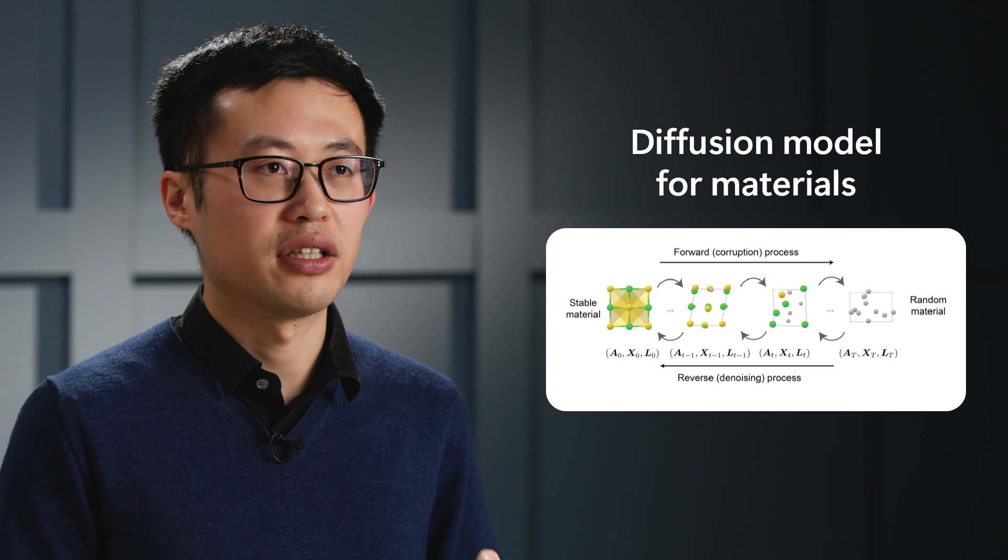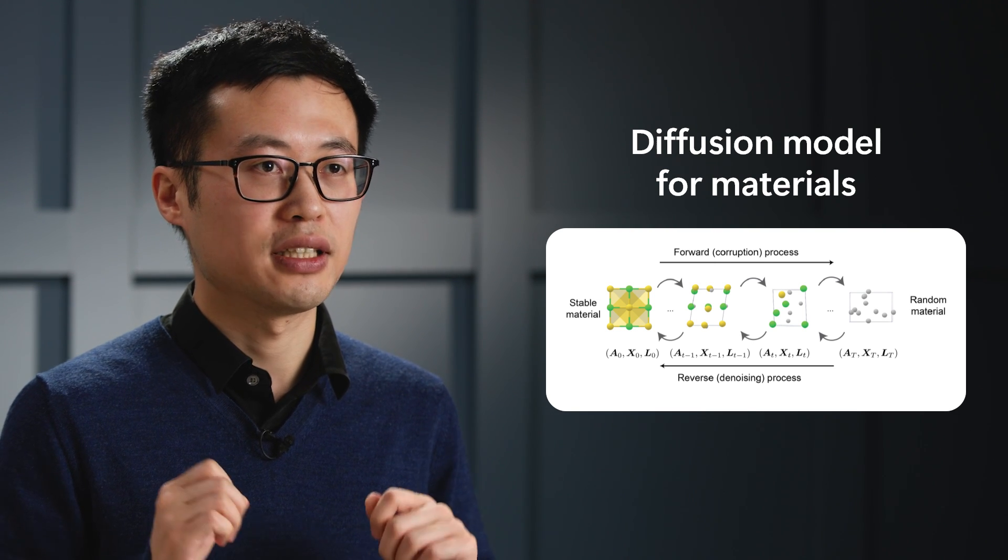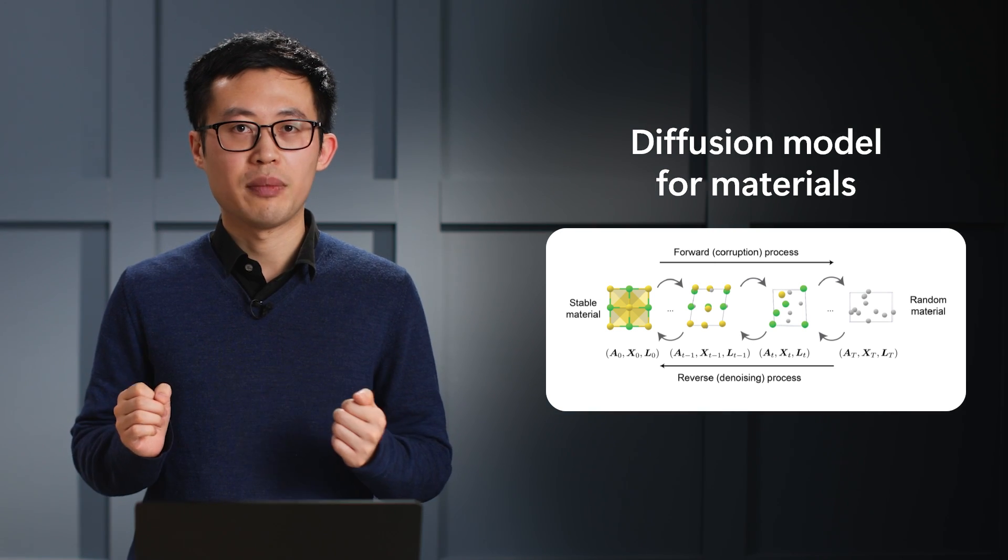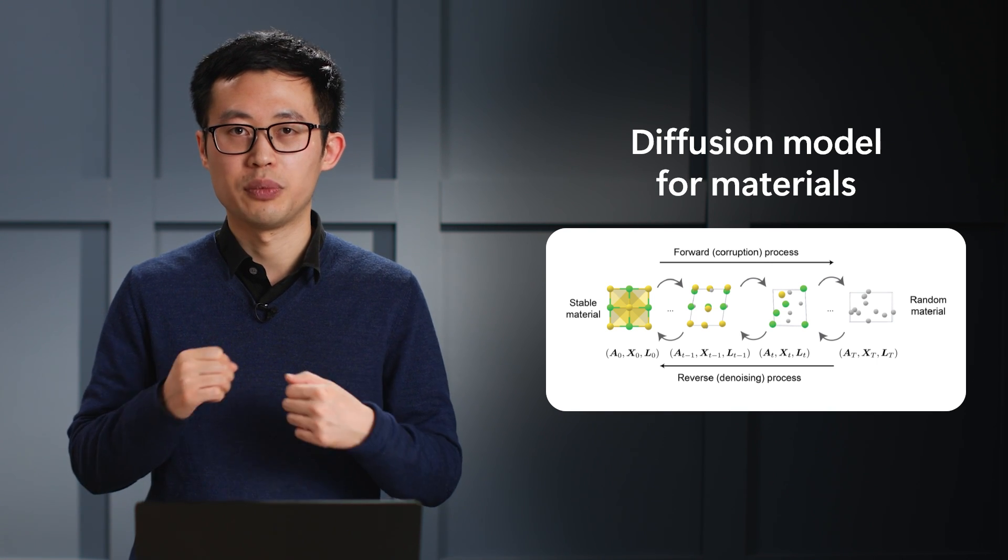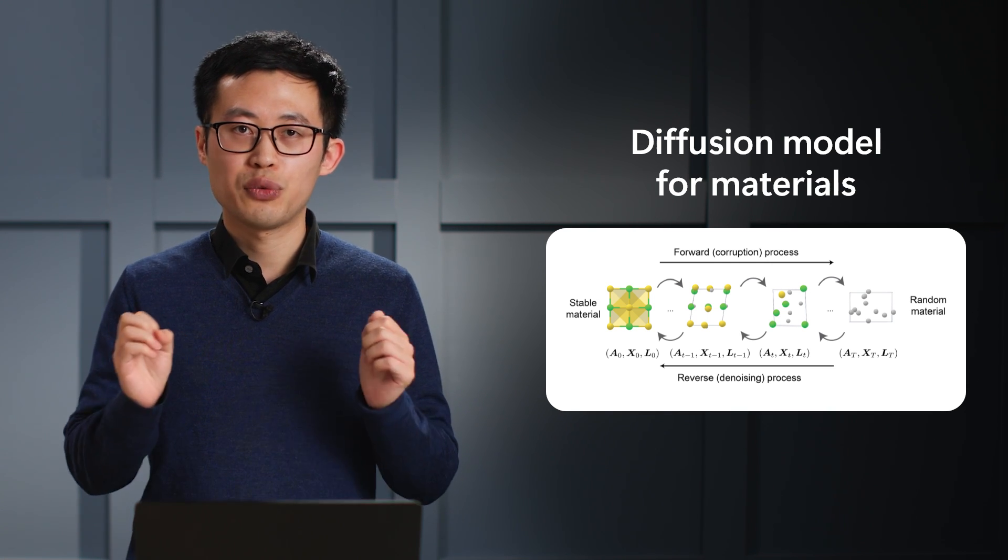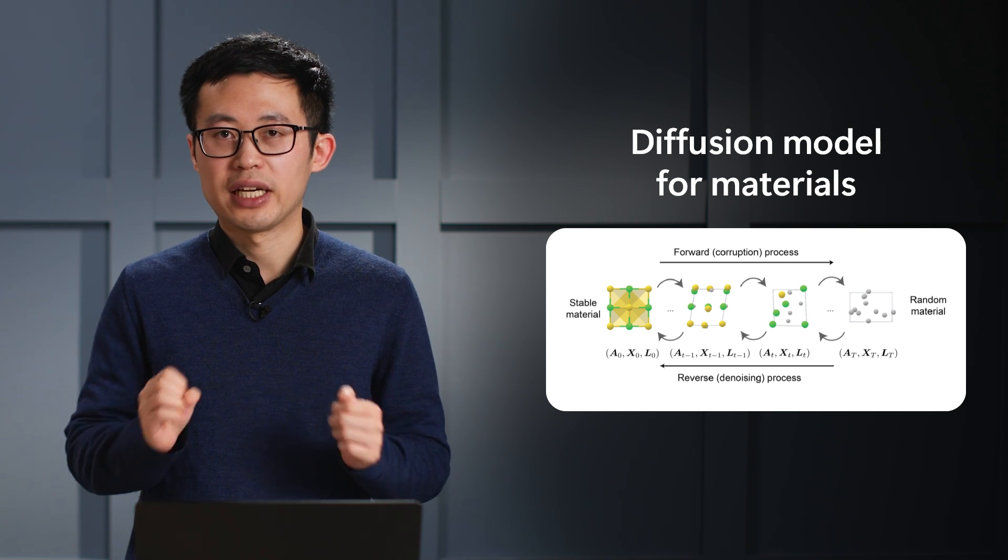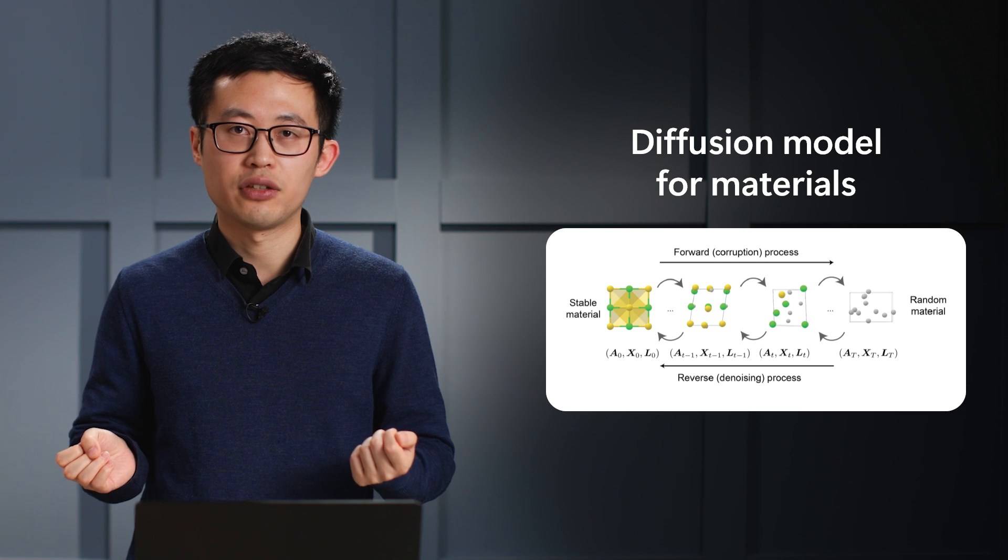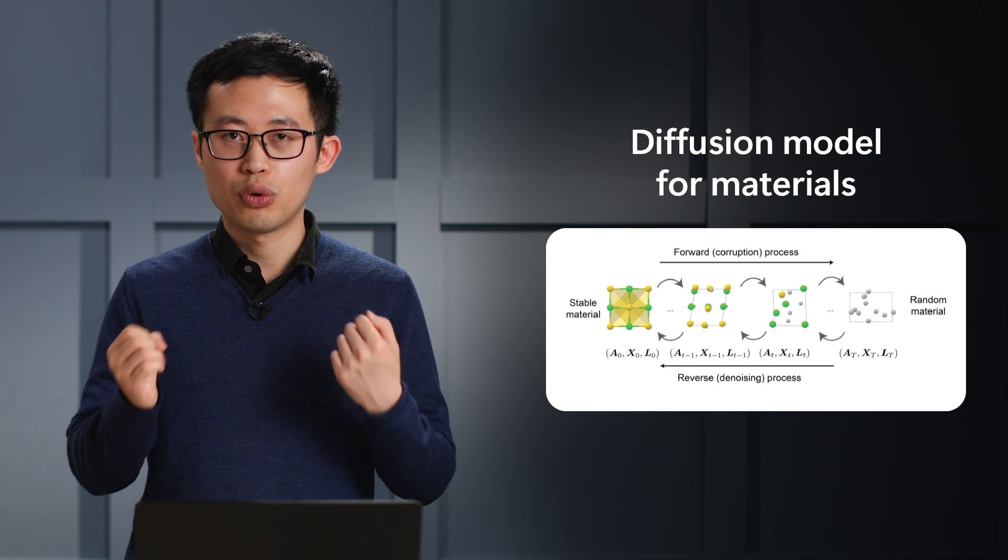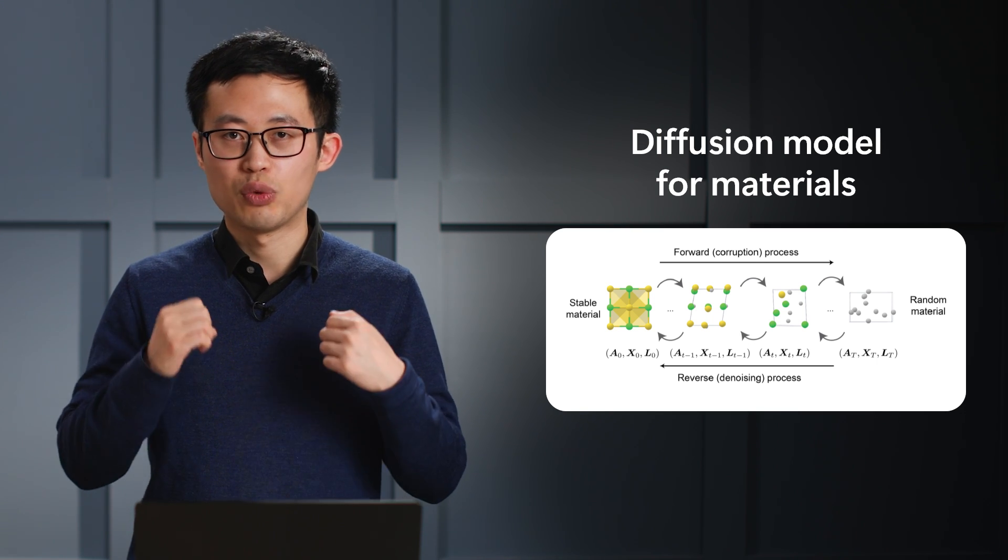At the core, MetaGen is a diffusion model specifically designed for materials. A material can be represented by its unit cell, the smallest repeating unit of the infinite periodic structure. It has three components: atom types, atom positions, and periodic lattice. We designed the forward process to corrupt all three components towards a random structure.